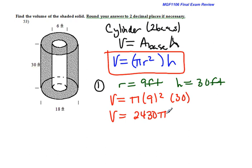So that's my volume for my first figure. My second figure, inside, it's going to have a radius of 3 feet, because this is the diameter. Height, 30 feet. So we're using again the same formula.